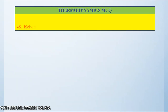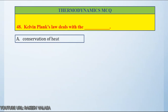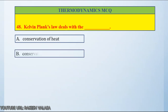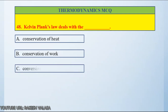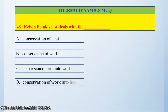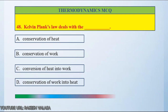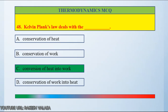Question number 48: Kelvin-Planck's law deals with — Option A: conservation of heat, Option B: conservation of work, Option C: conservation of heat into work, Option D: conservation of work into heat. The answer is Kelvin-Planck's law deals with the conversion of heat into work. Kelvin-Planck states that it is impossible to develop a physically operating device the sole effect of which is to absorb energy in the form of heat from a single thermal reservoir and deliver an equivalent amount of work. So the answer is option C.